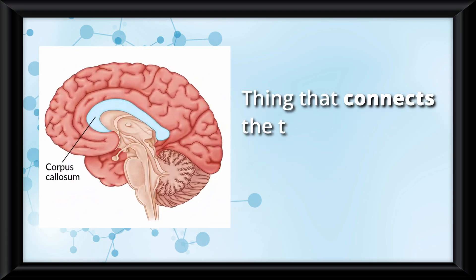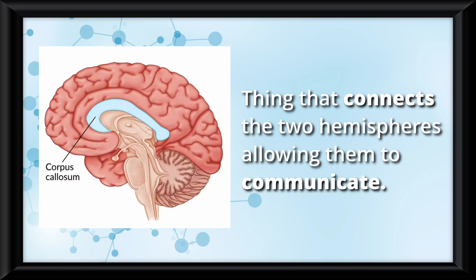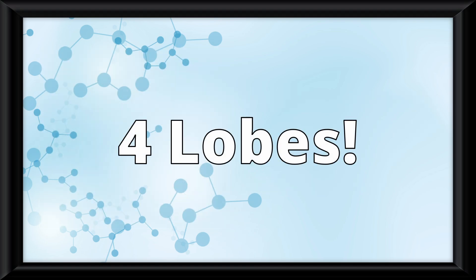The corpus callosum is the thing that connects the two hemispheres, allowing them to communicate. Each hemisphere has four lobes within it.